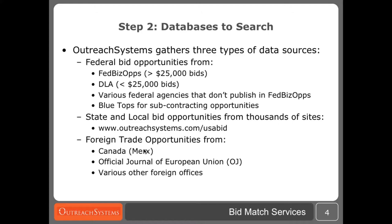Unfortunately there are a number of federal agencies that simply don't publish in FedBizOps. They have their own website and they post their own bids there. Outreach Systems gathers bids from all these federal agencies and puts them together in one database that we call our small database. The reason we called it our small database is from many years ago when only small dollar value opportunities were posted on the agency's website. These days we actually see large dollar values as well, so the name is a little bit of a misnomer, but essentially this database contains everything that is not otherwise found in FedBizOps or the DLA database. Last but not least we also offer the BlueTops database, which is a database of contract awards that have already been issued in excess of five million dollars in value, and the reason to include those would be for subcontracting opportunities.